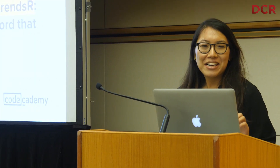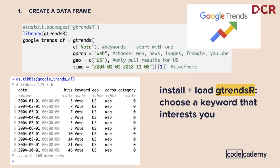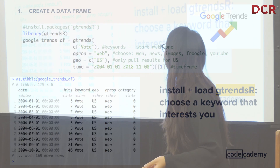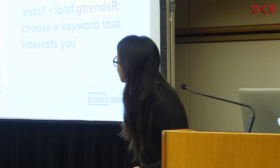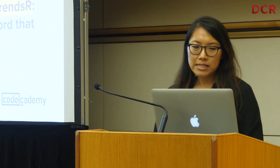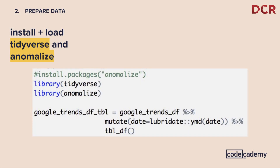The first thing we're going to do is create a data frame. I showed you some proprietary data before, but I thought it would be fun to use Google Trends data. I pulled the Google Trends data for the word 'vote' for 2004 to 2018 and produced a tibble to verify everything worked. The two packages we use are tidyverse and anomalize. Anomalize sits within the tidyverse and was just released this year in April.